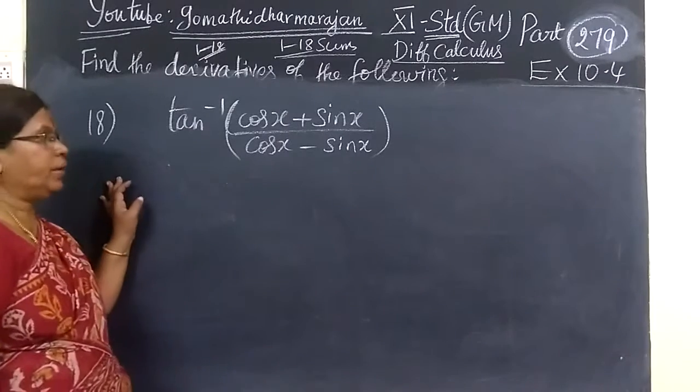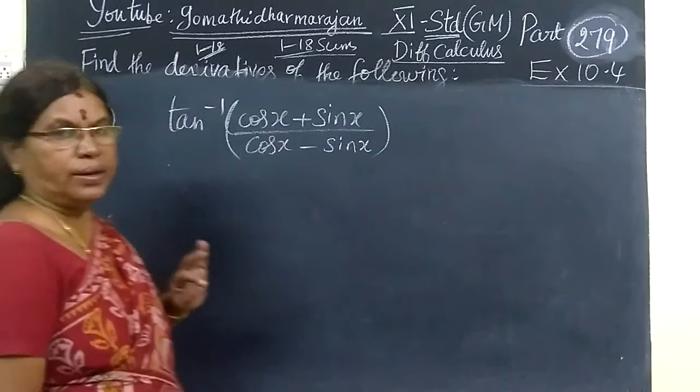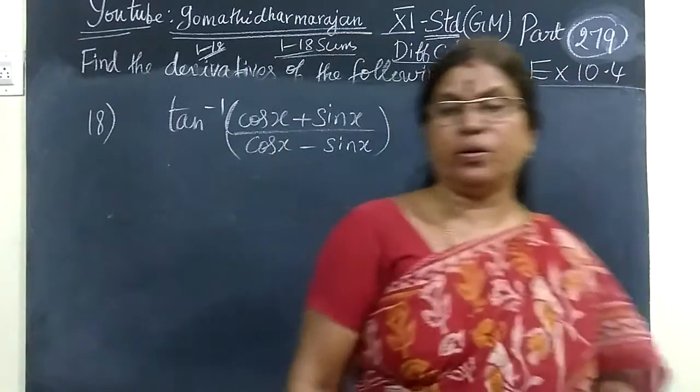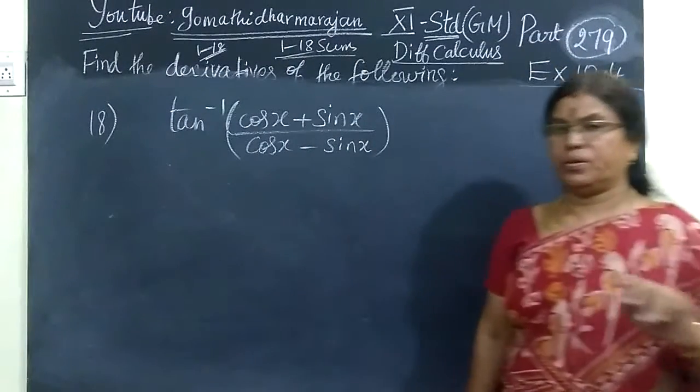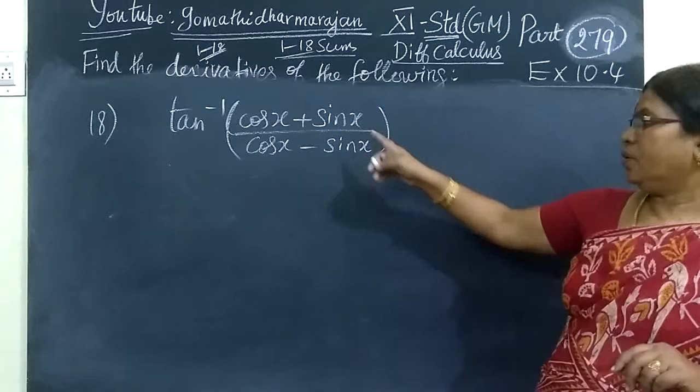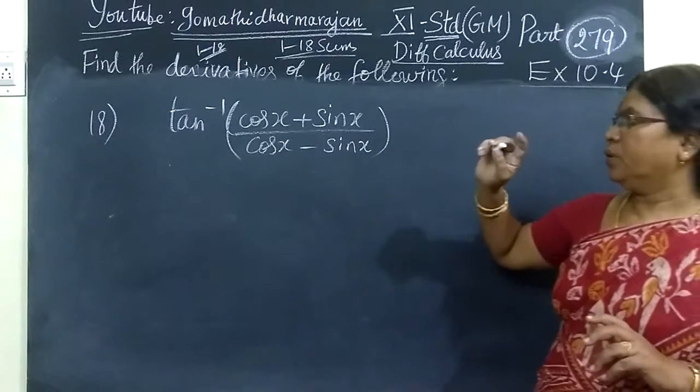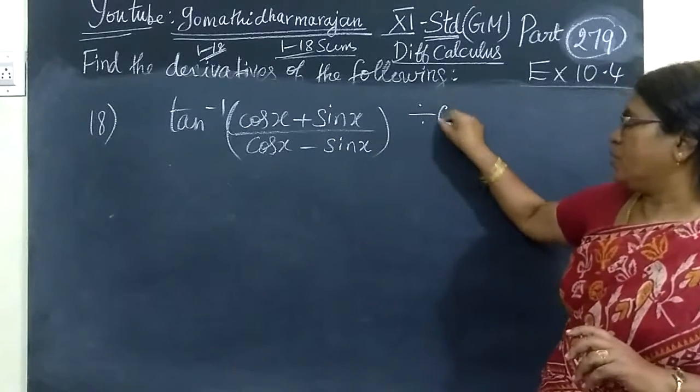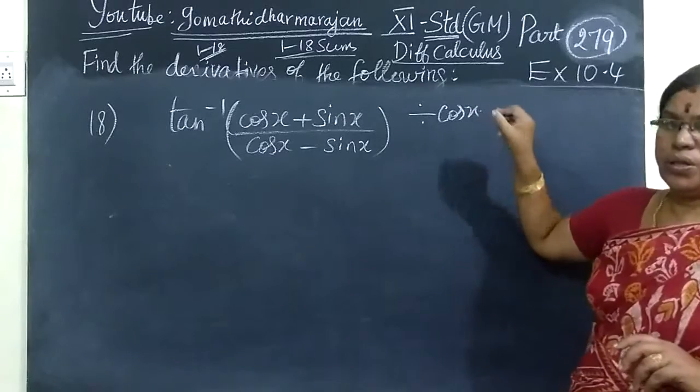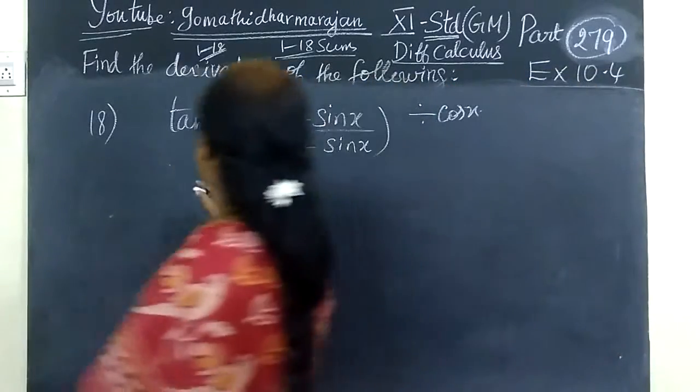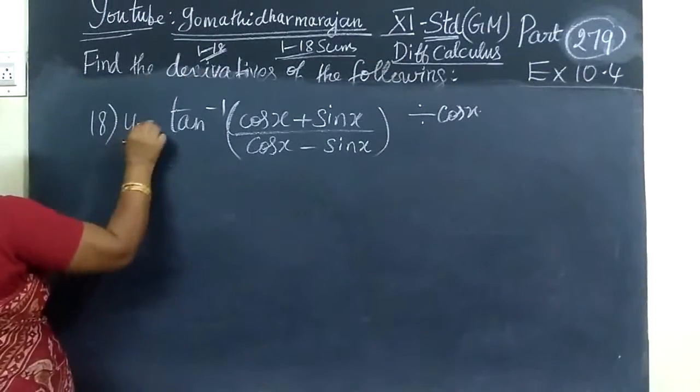Next question is question number 18. This is the bonus class of substitution. Put x equal to tan theta. This is a way to prove. You have to divide by cosine. You are dividing by cosine.